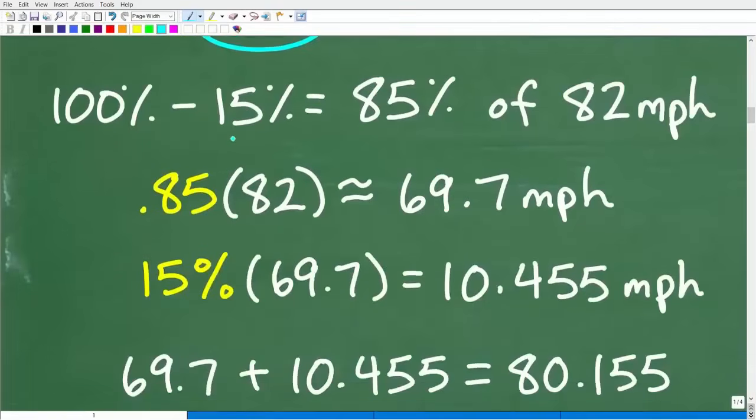So if we take 15% and subtract it from 100%, we get 85%. So maybe the truck is going 85% of what the car is traveling. Well, let's go ahead and figure out what 85% of 82 miles per hour is. So how do you find the percent of a number? Well, easy. All we have to do is convert or write that percent as a decimal. And the way we do that is divide by 100 or move the decimal point over two places to the left.